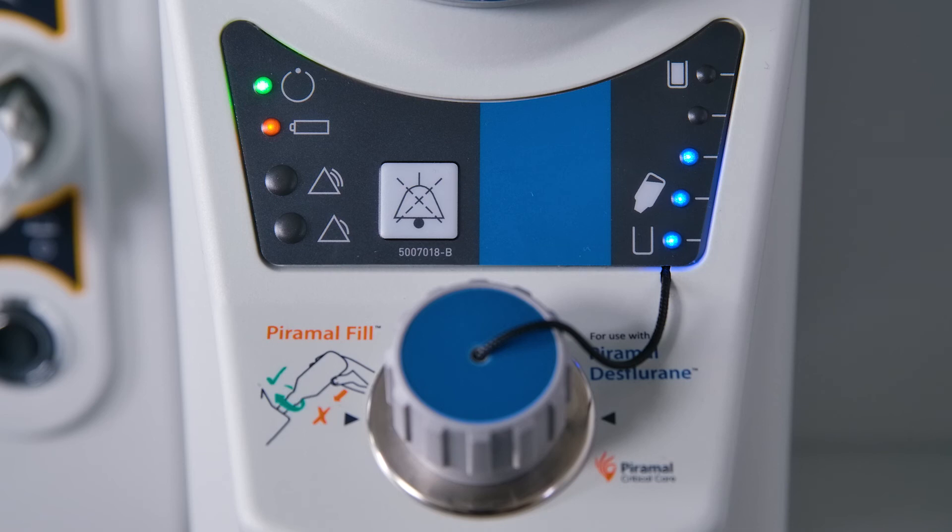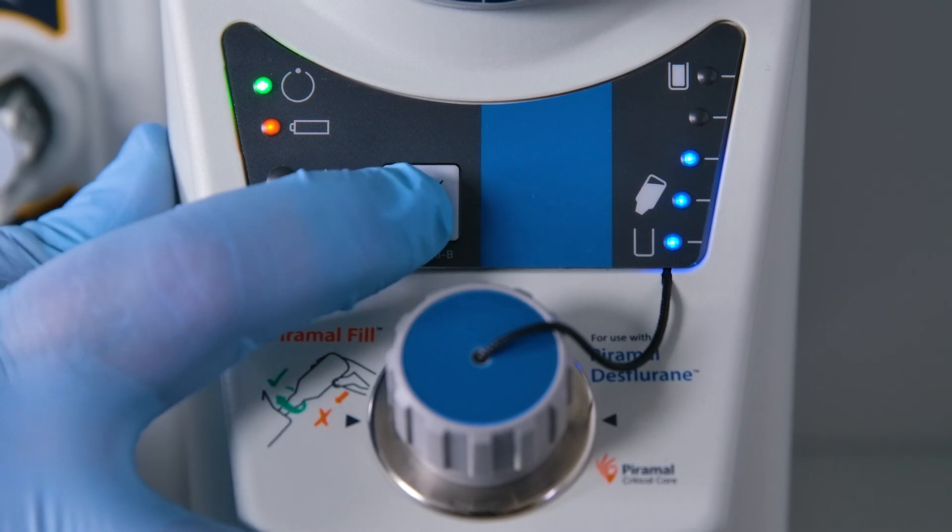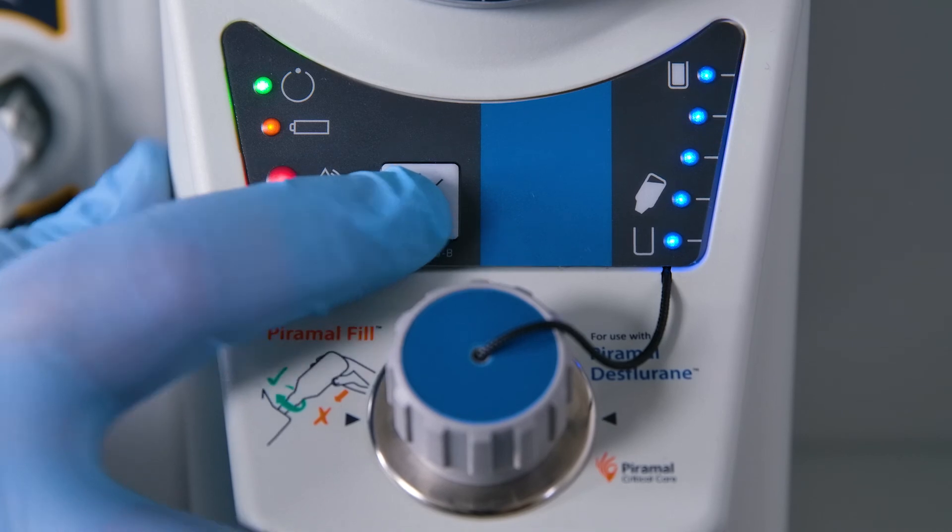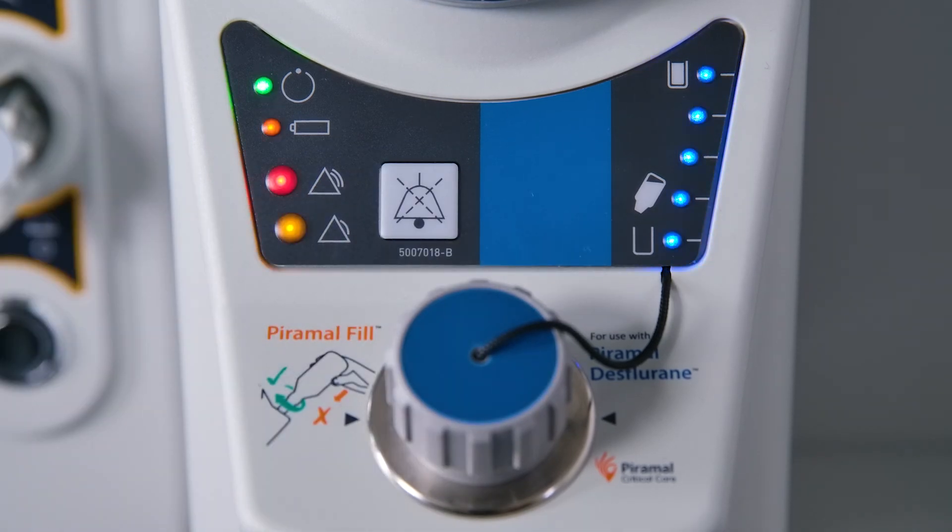Initiating a vaporizer self-test. With the vaporizer in standby mode, the user can initiate a brief self-test sequence. Press and hold the mute control for 5 seconds to initiate a vaporizer self-test. All indicators will flash and the audio sounder operates during the test sequence. The vaporizer will return to standby mode when the self-test is complete.